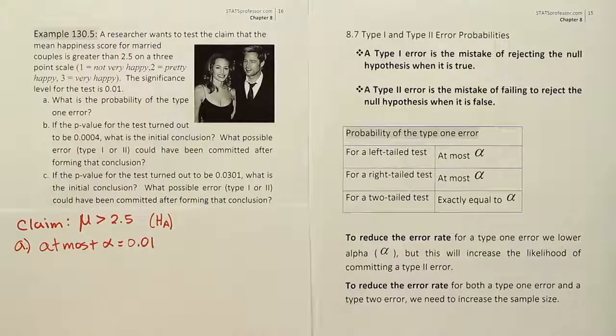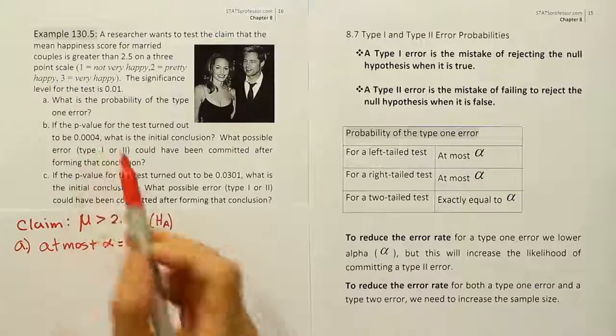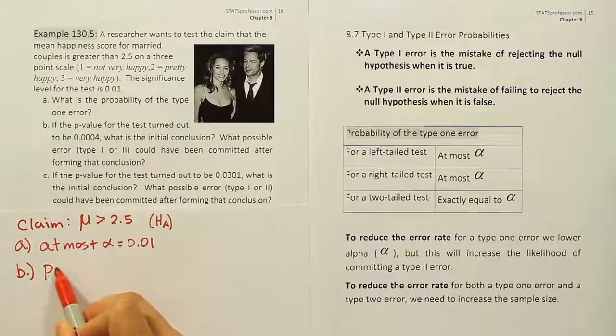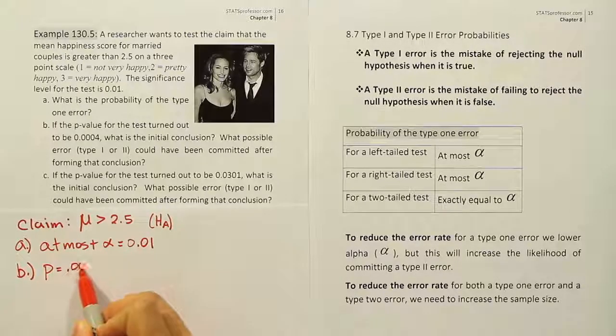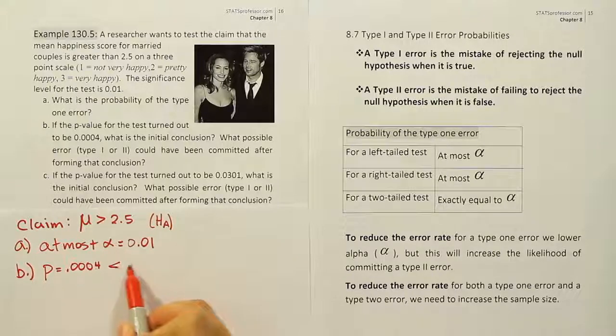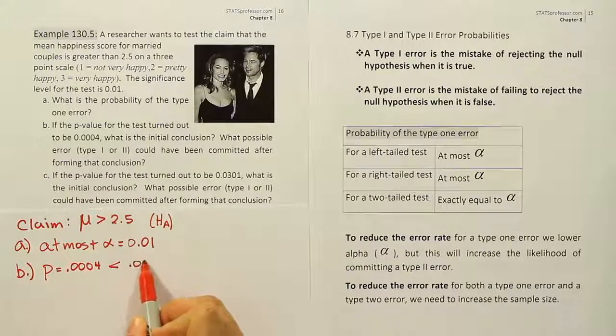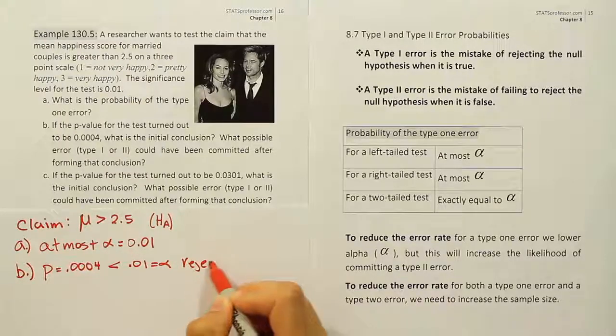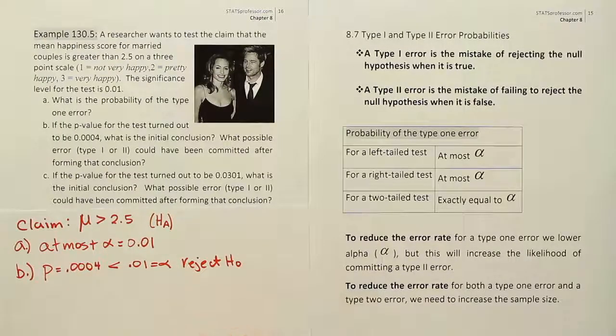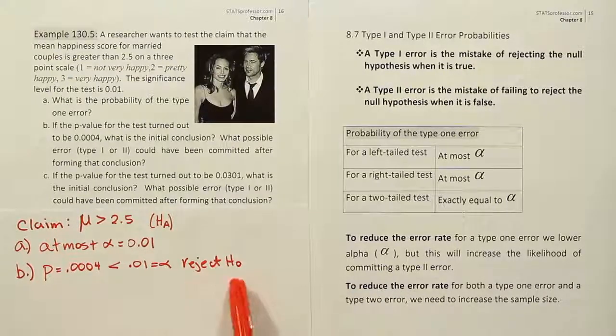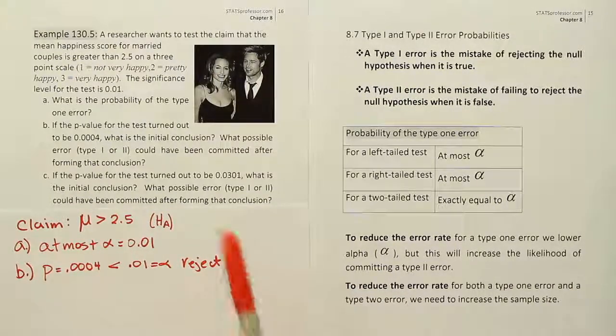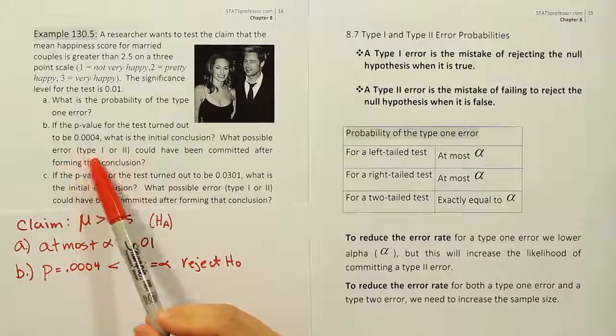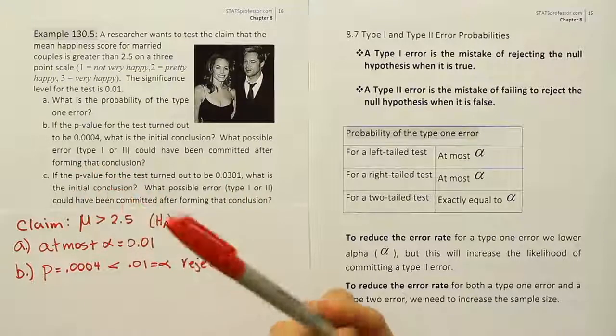Part B says if the p-value turned out to be 0.0004, what is the initial conclusion? Well, let's think about that. If your p-value turns out to be 0.0004, that is less than the alpha value of 0.01. And whenever that happens, we are going to reject the null hypothesis. So if we rejected the null hypothesis when the p-value is small, then we have to answer the next question here, which is what possible error type 1 or 2 could have been committed after forming that conclusion?